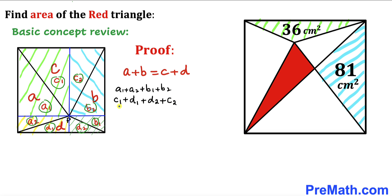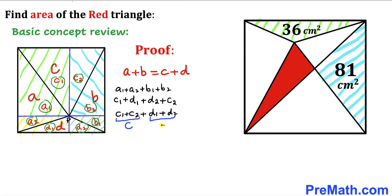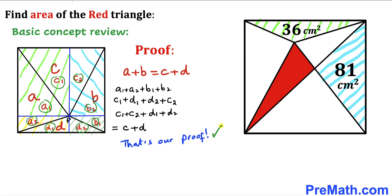Rearranging, we get c sub 1 plus c sub 2, plus d sub 1 plus d sub 2. We observe that c sub 1 plus c sub 2 is the whole area c, and d sub 1 plus d sub 2 is the whole area d. So this whole expression turns out to be c plus d, which completes the proof.